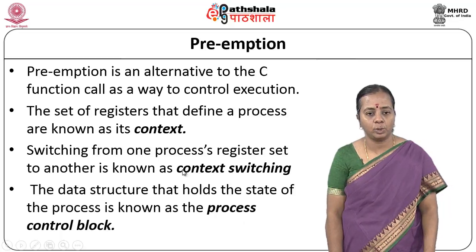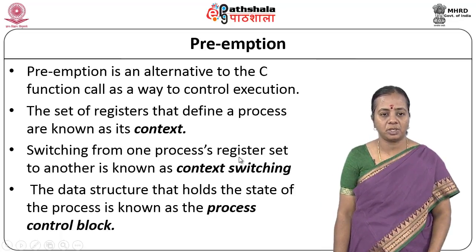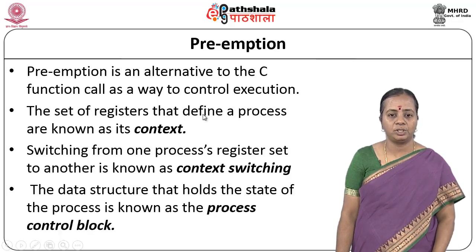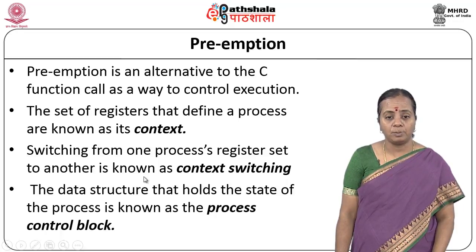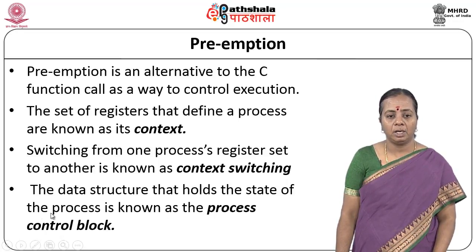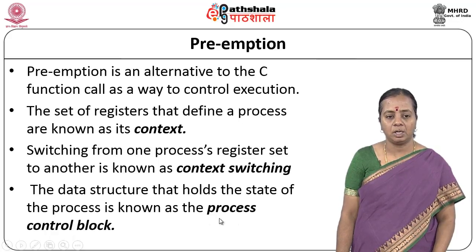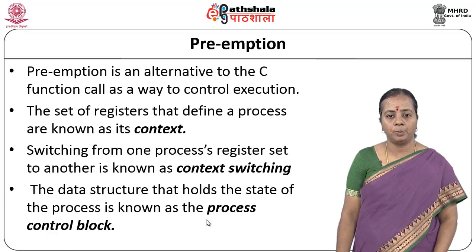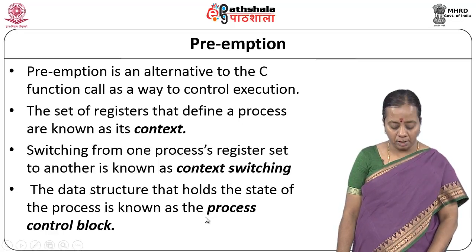The data structure which holds the state of the process is known as the Process Control Block. Context switching is switching from one process register set to another. The set of registers which define a process are known as its context. If this context is stored in a data structure called a Process Control Block or Task Control Block, it keeps all information about the current status of the process and the current values of different registers.